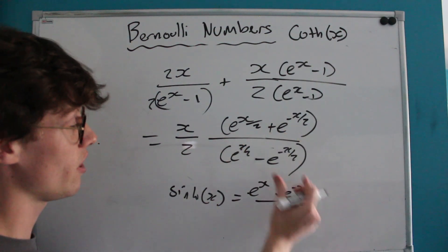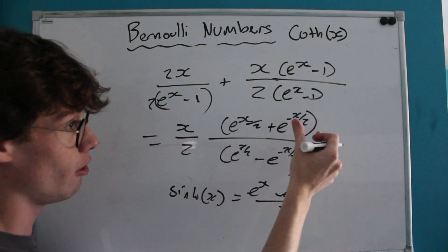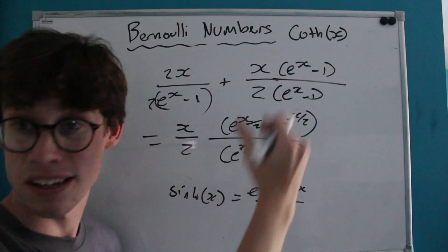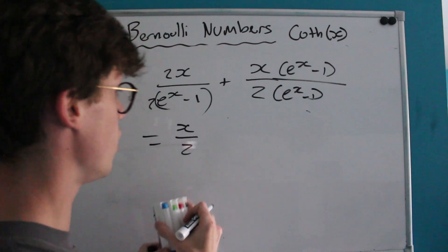Clearly we can see on our denominator we've got hyperbolic sine missing a factor of a half, and on the top we've got hyperbolic cosine missing a factor of a half. But that factor of a half would have been cancelled out when dividing them through anyway, which means really what we're looking at here is just...